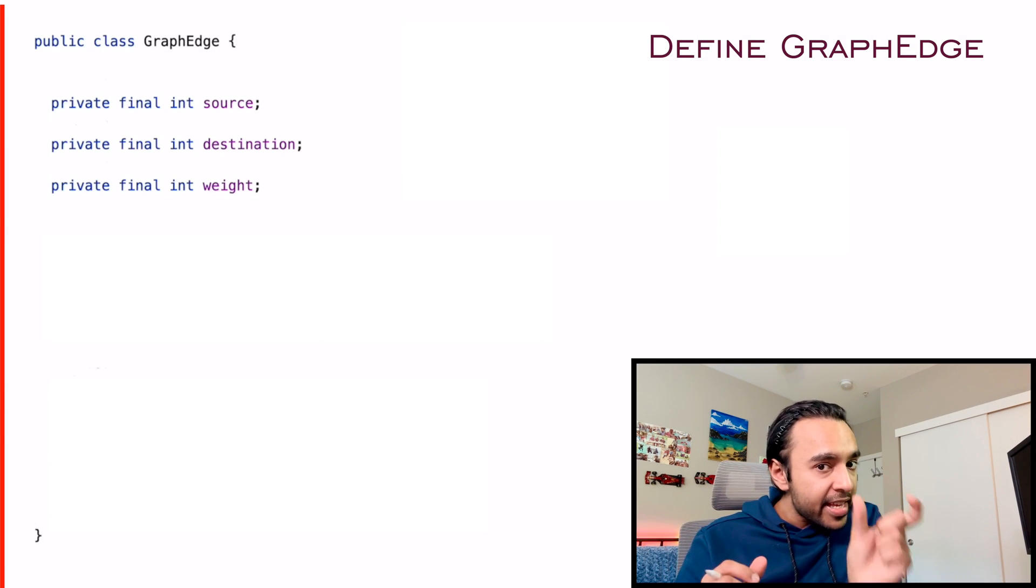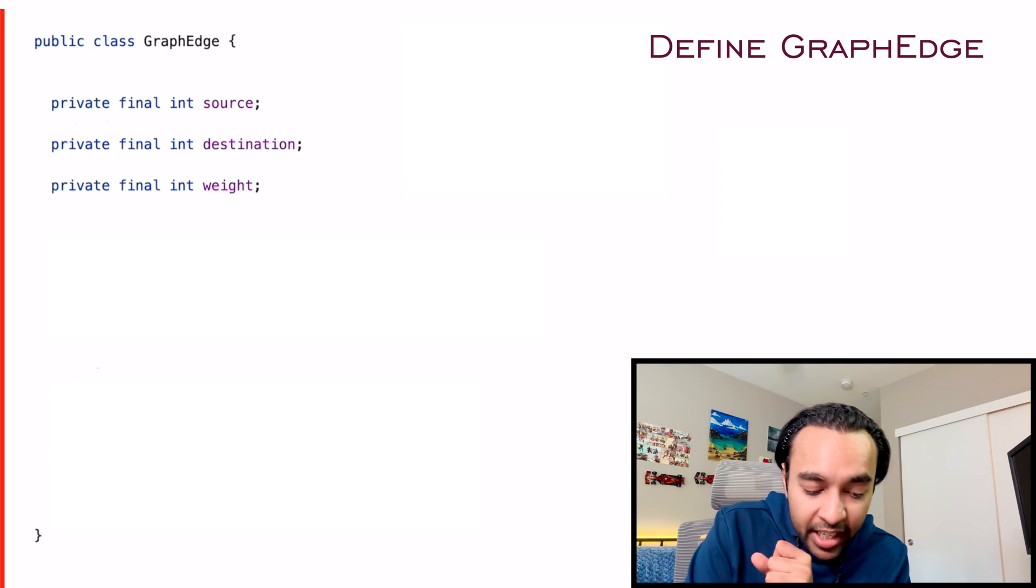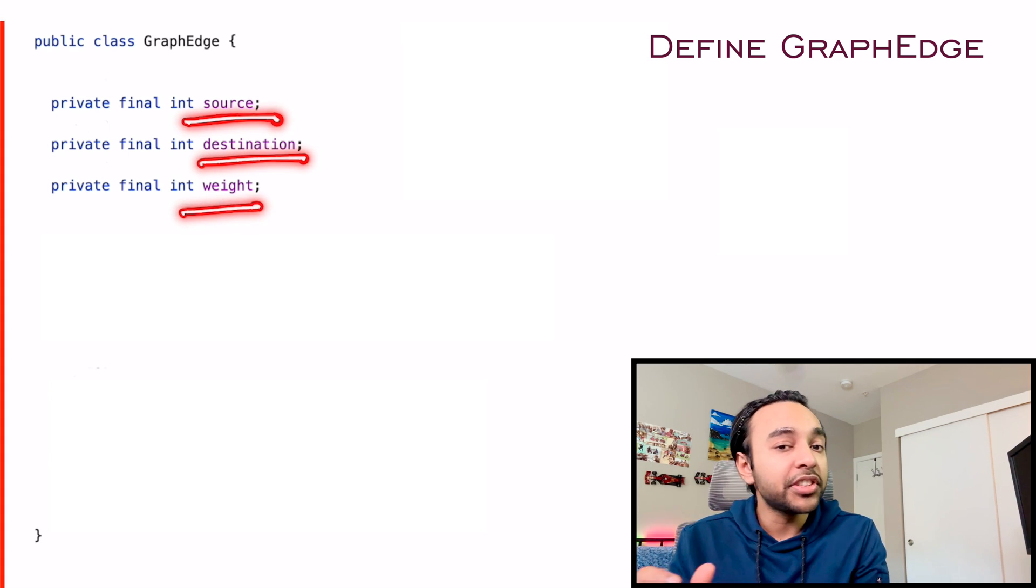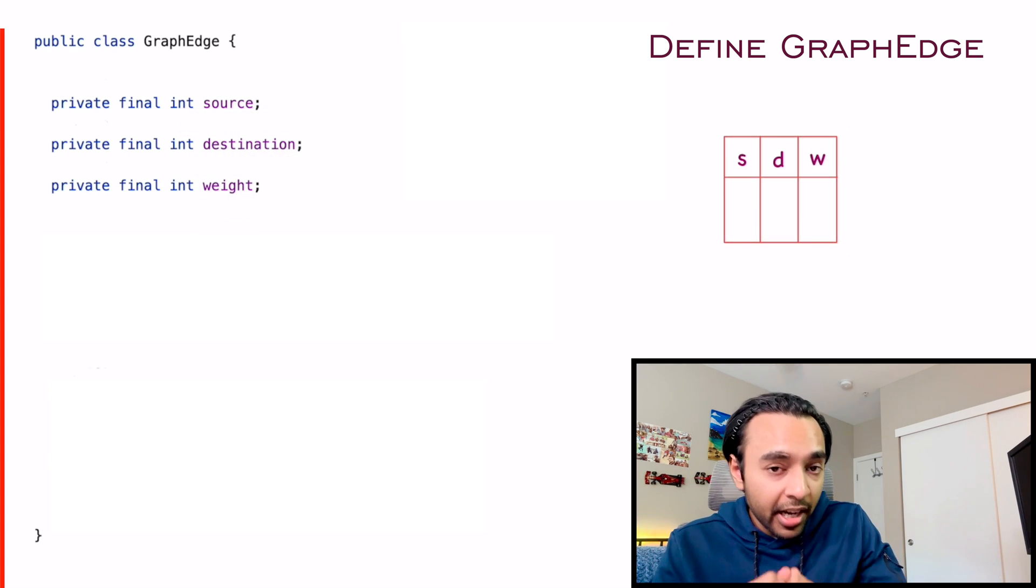What I'm going to do is I will define a graph edge. And as you know, an edge will have three different components. It will have a source, it will have a destination, and it will have some weight associated with it.